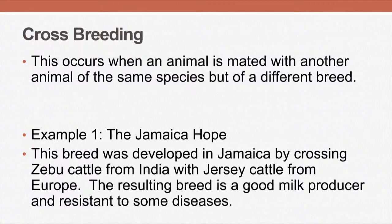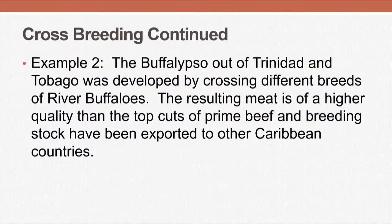I want to give you some examples of crossbreeding done in our region. Looking at Jamaica first: the Jamaica Hope was developed by Dr. T.P. Leckie by crossing Zebu cattle from India with Jersey cattle from Europe. The resulting breed is a good milk producer with high butterfat content and resistant to some diseases.